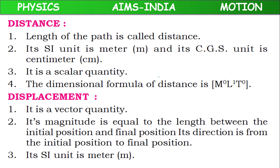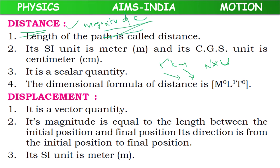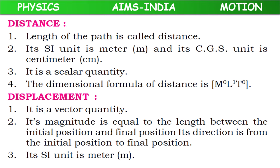Magnitude means the combination of a numerical value and a unit — the product of numerical value and unit is called the magnitude of a physical quantity. So distance will have only magnitude. It does not depend on direction. It is a scalar quantity.